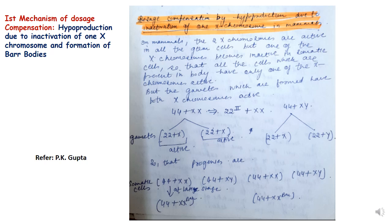For example, females have 44 + XX chromosomes (22 pairs of autosomes and XX), while males have 44 + XY. When gametes are formed, both X chromosomes are in active form. But after fertilization, in the somatic cells of female progeny with 44 + XX chromosomes, at a later stage one of the X chromosomes will become heterochromatized and can be seen as a darkly stained body under the microscope.